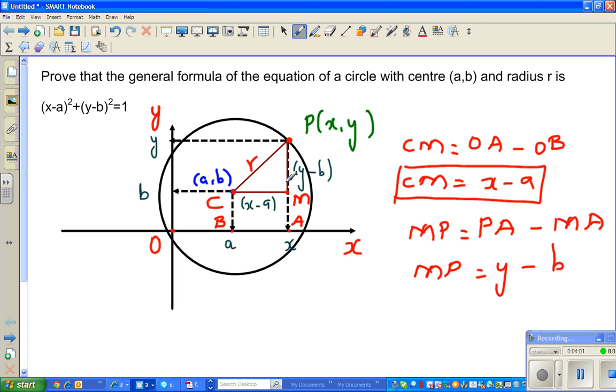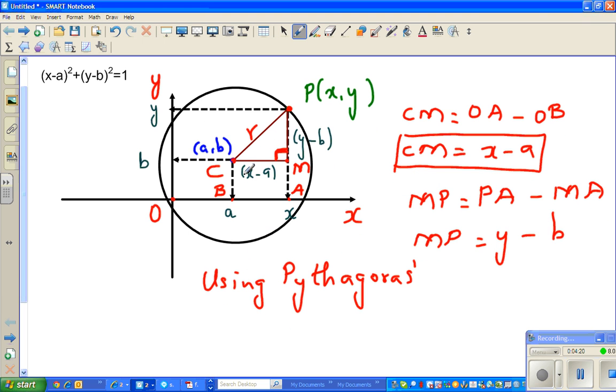Now this has become a right angle triangle and I can use Pythagorean theorem. So using Pythagorean theorem, can I say this squared plus this squared is equal to r squared? So I can say (x-a)² + (y-b)² is equal to r².